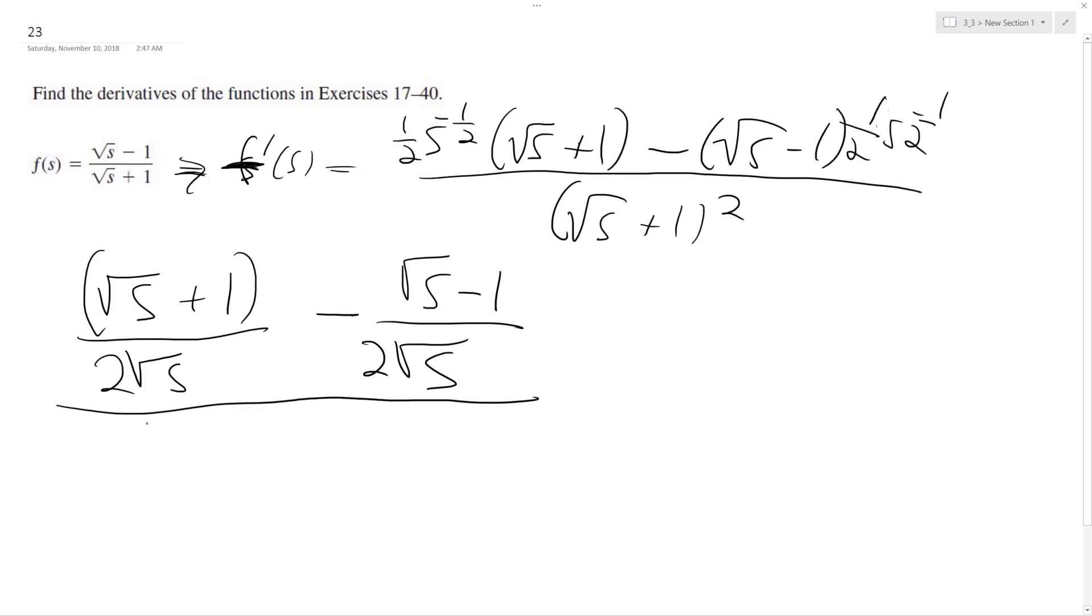I'm sorry, this is all under the square root of 5 plus 1 squared. So we get square root of 5 plus 1 minus square root of 5 plus 1. These cancel out, and this becomes 2 square root of 5.